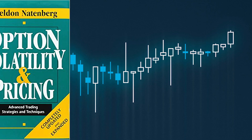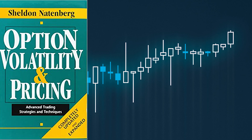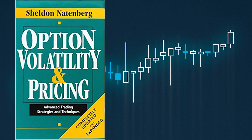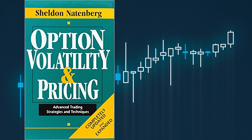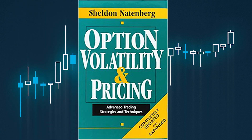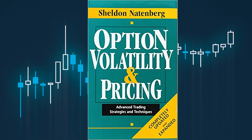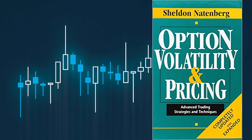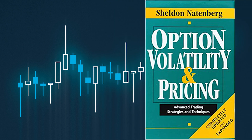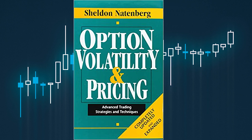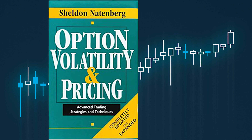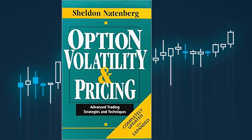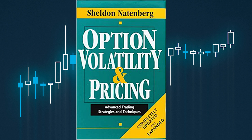Option Volatility and Pricing: Advanced Trading Strategies and Techniques by Sheldon Natenberg is a comprehensive guide to understanding and utilizing option trading strategies. It covers advanced techniques for pricing and volatility, as well as practical examples and case studies to help traders make informed decisions. This book is ideal for experienced traders looking to improve their skills and gain a deeper understanding of the options market.